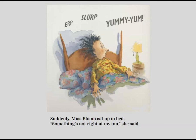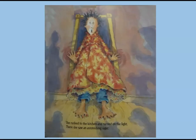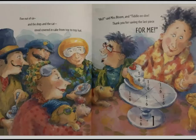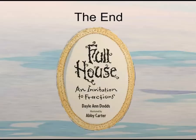Suddenly, Miss Bloom sat up in bed. Something's not right in my inn, she said. She rushed to the kitchen and turned on the light. There she saw an astonishing sight. Five out of six and the dogs and the cat stood covered in cake from toe to top hat. Well, said Miss Bloom and Tiddaladee, thank you for saving the last piece for me. The end.